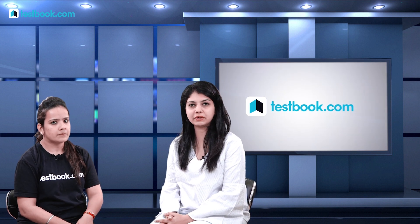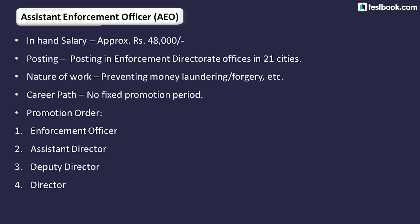Moving to a different department — the Enforcement Directorate. The post here is Assistant Enforcement Officer. This sector deals with money laundering and financial crimes. Postings are in 21 cities or metro cities. Promotions are a little slow — in 8 to 10 years you get promoted to Enforcement Officer, then Assistant Director, then Deputy Director. The job profile involves data collection related to financial matters.